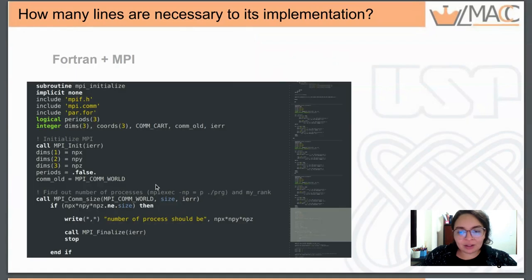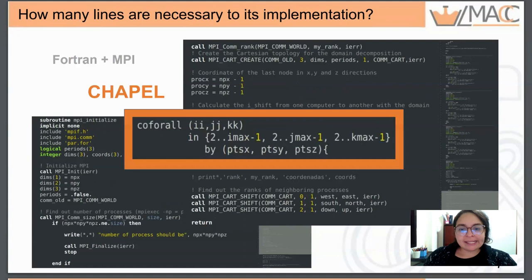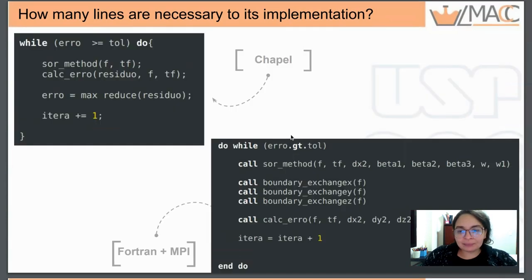How many lines are necessary to create a topology? Maybe something like five lines? And what about Chapel? I use the coforall statement to try to reproduce this effect. And notice that in Chapel I needed one line.